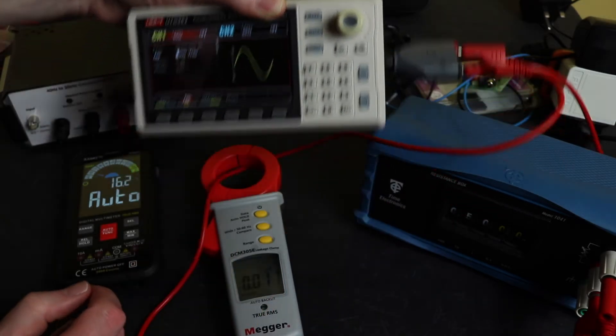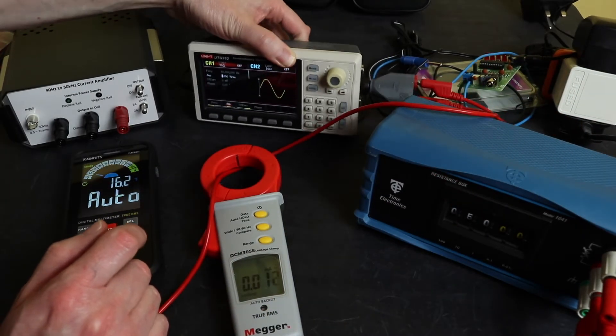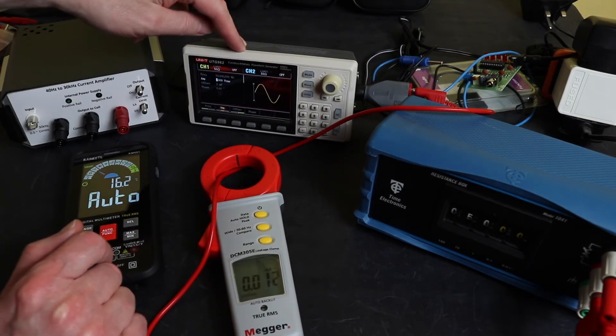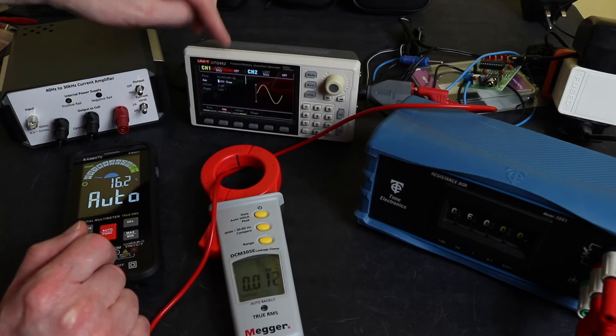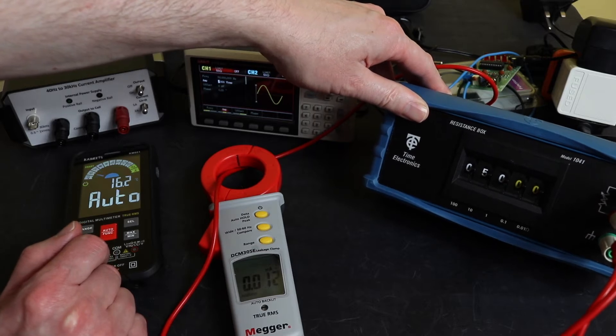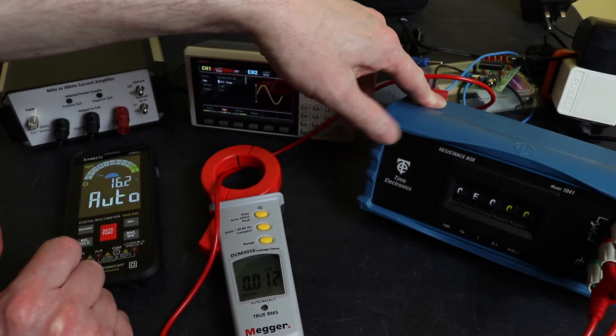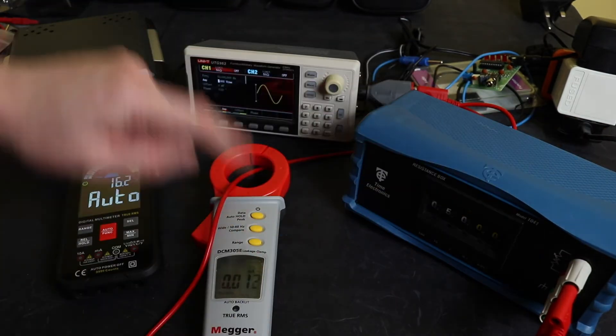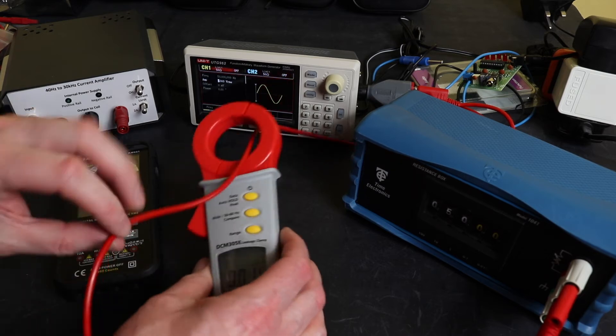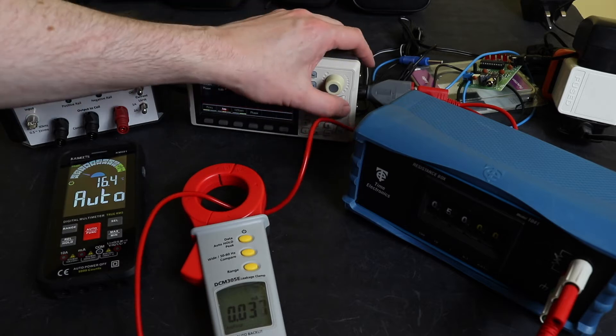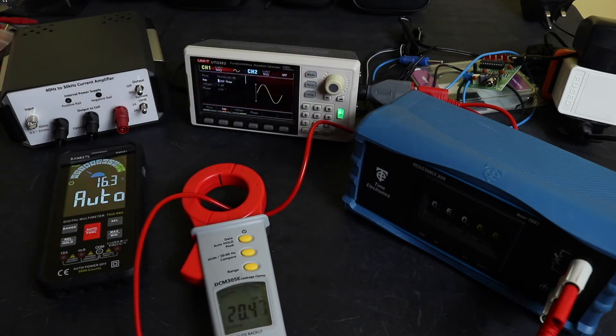These units are designed to work with a 50 ohm load, as you can see on the front of the screen there. I've got here a decade resistance box that I've set to 50 ohms. You could use a standard 50 ohm resistor if you have one. I'm just using this whilst I play around a little bit. That decade box is just wired in series with the output of this and then I have my current clamp going around one of the wires through the load.